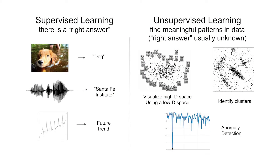Moving on, I'm going to talk about two major areas of machine learning: supervised learning and unsupervised learning. In supervised learning, there's essentially a right answer to a question, and we train the algorithm by showing it what the right answers are.